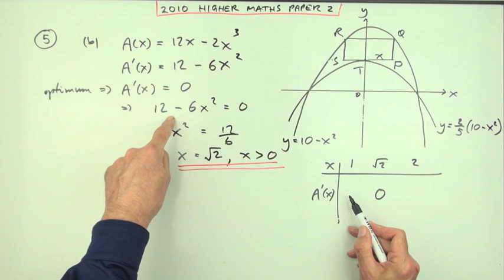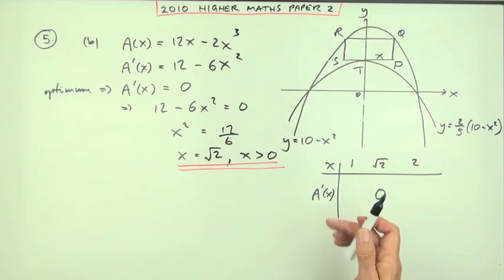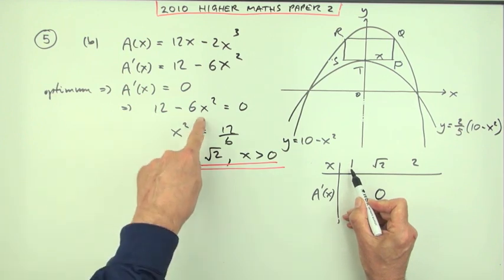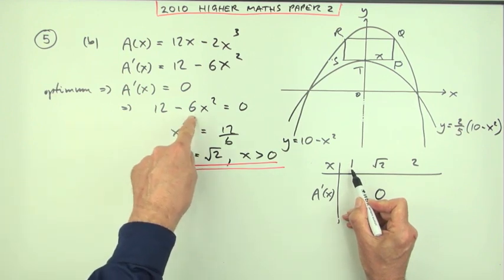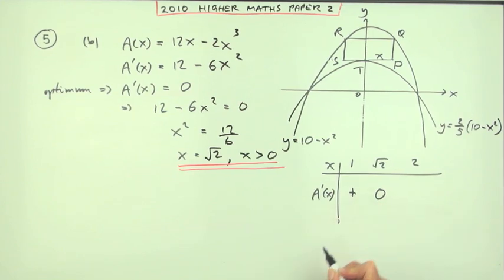Now you don't need to put the actual values down. Put them in if you like from here. It's only the signs that matter, which way the gradients are going. So at 1, that's going to be 12 take away 6, which is positive 6. The only thing that matters is positive. Put in the 6 if you like.